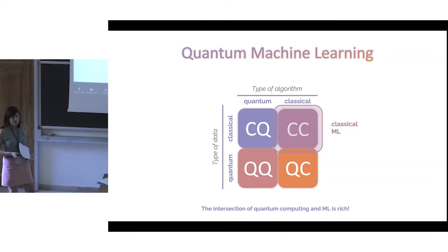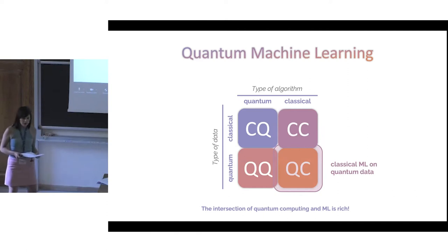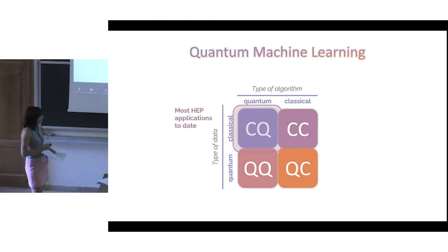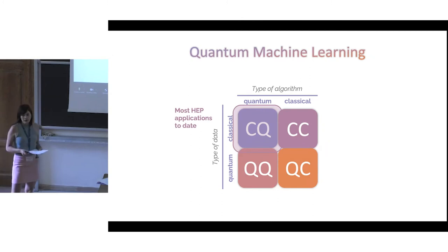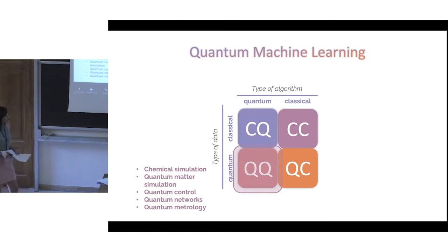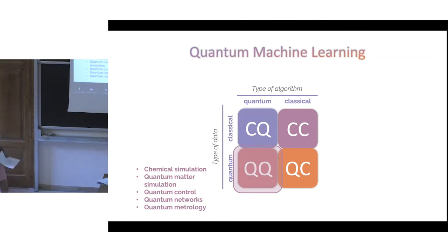Classical algorithms on classical data is where classical machine learning lives — we consider it for completeness. Then there's the application of classical data on quantum systems, with development in optimal control, learning quantum dynamics, and optimizing qubit readout. Moving to the left hemisphere, quantum algorithms applied to classical data is where most HEP applications live. Finally, an unexplored field is quantum algorithms applied to quantum data, for chemical simulation, quantum matter simulation, quantum control networks, and metrology.